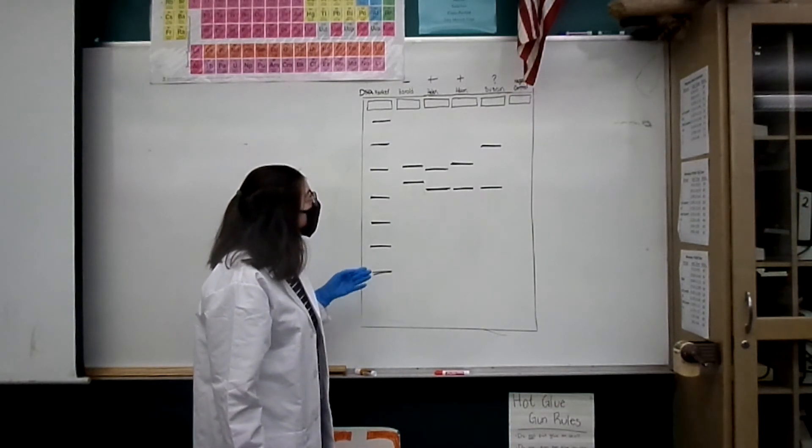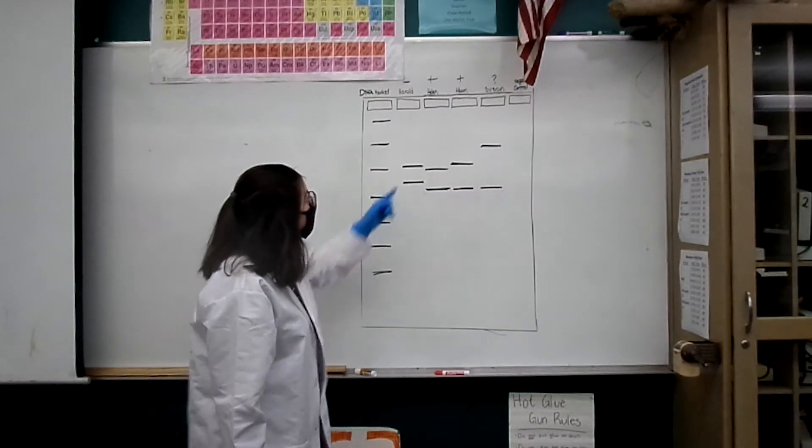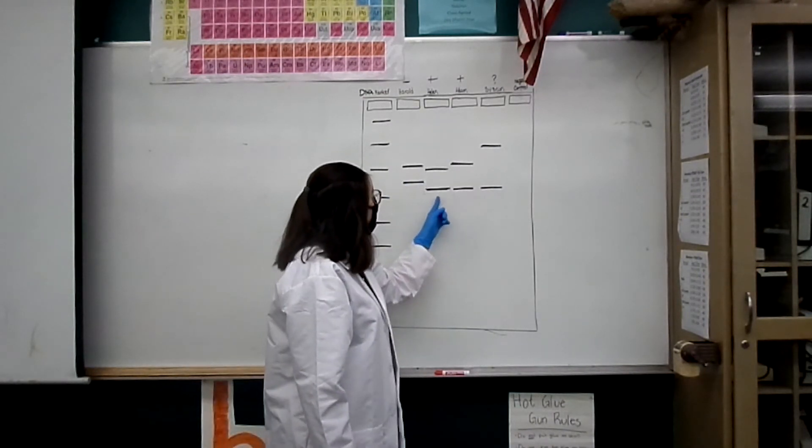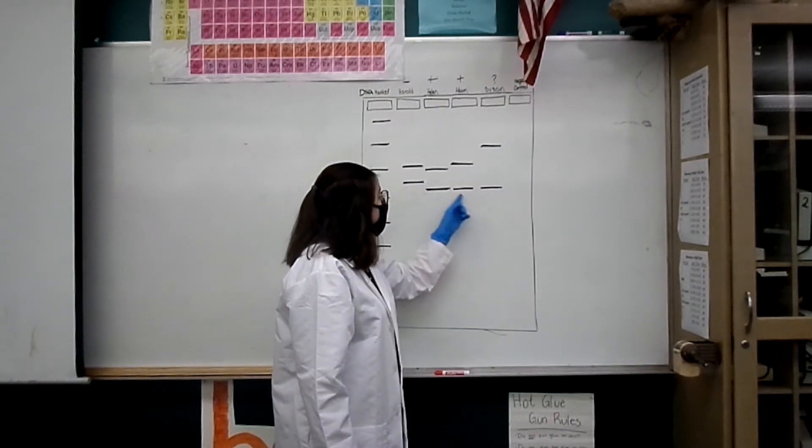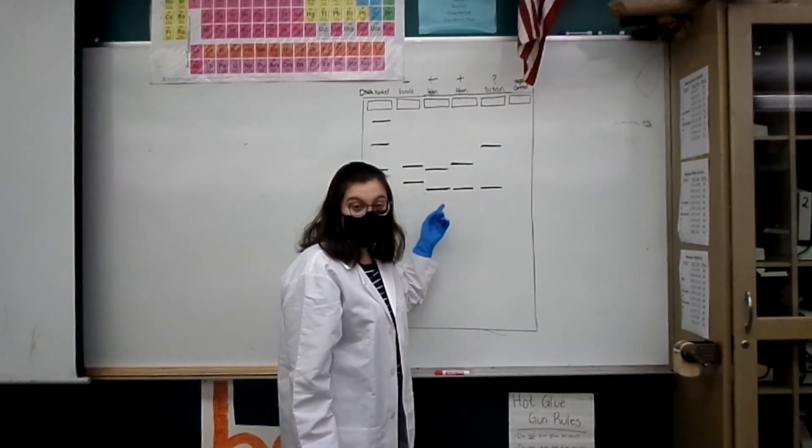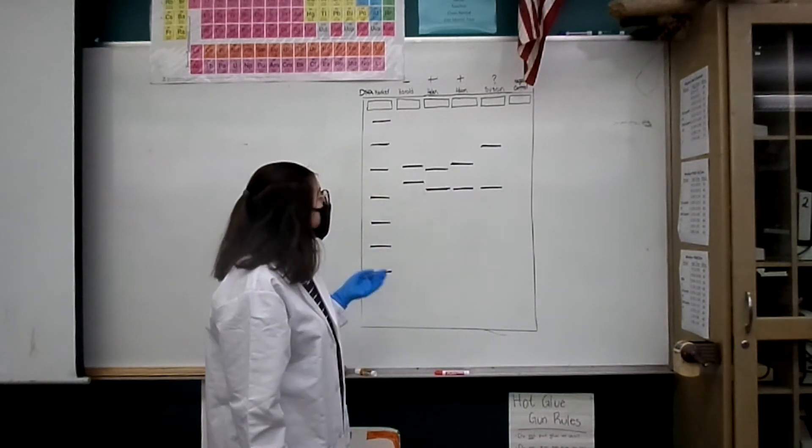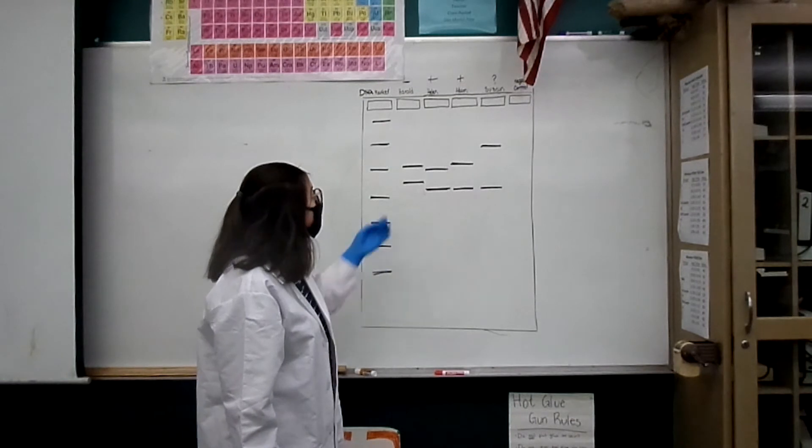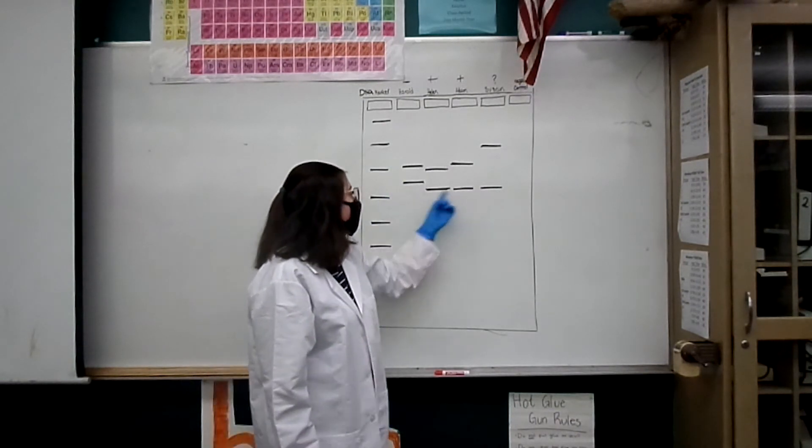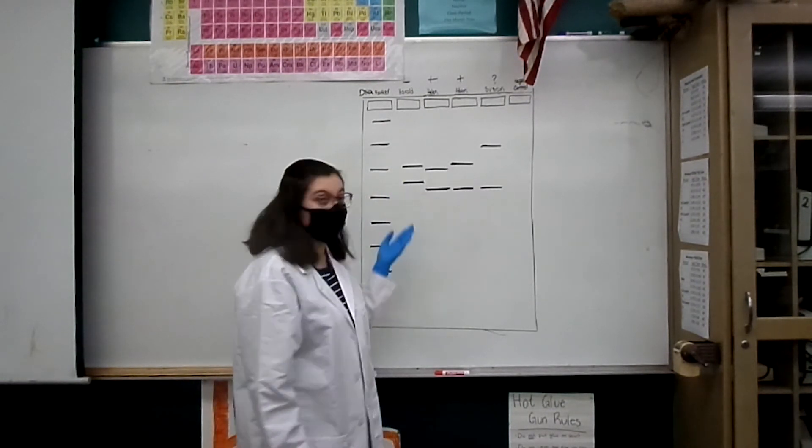So what we want to do is we can see that Helen and Adam both have these matching lengths of genes or base pairs, and they both have breast cancer. But Harold does not have this matching piece, and he does not have breast cancer.